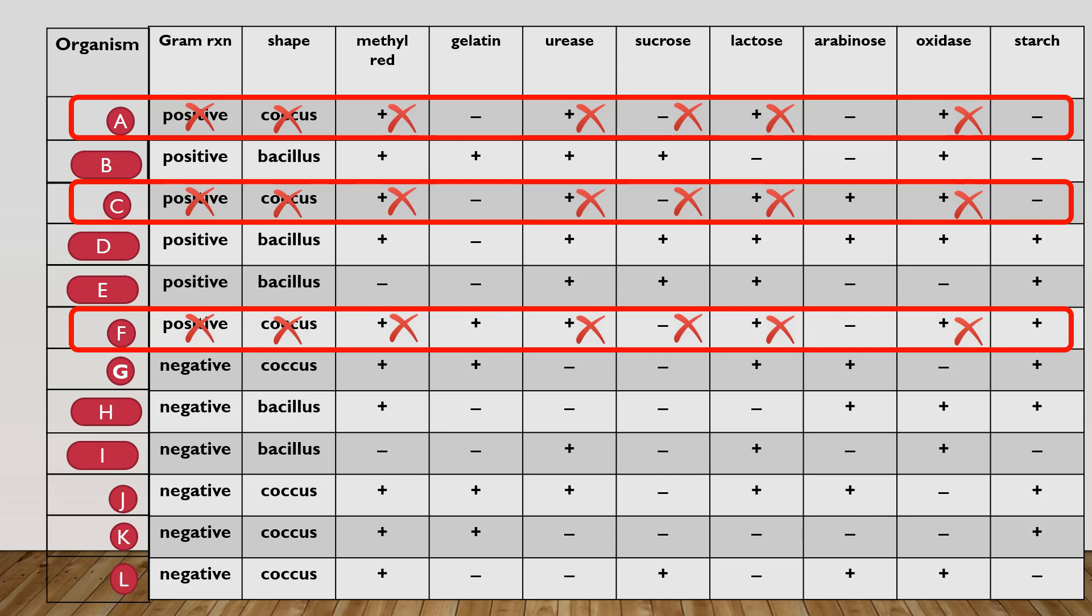So based on this table, there's only three possible questions that we can ask to help us separate bacteria A from bacteria C and from bacteria F. So I can ask the question, is the gelatin test result positive? Or I can also say, is the gelatin test negative? Either one. That's one question.